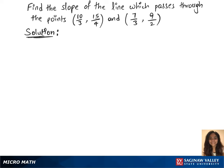To find the slope of the line which passes through the given points, we'll first name the points as x1, y1 and x2, y2.